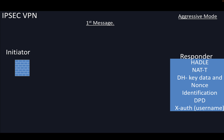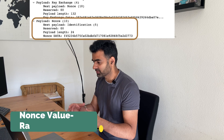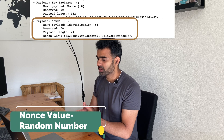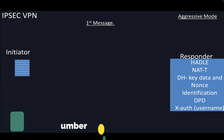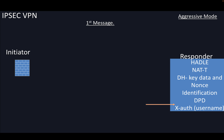Apart from that, NAT-T also goes in the first message. Diffie-Hellman key data also goes, and as we know in Diffie-Hellman, the nonce value — a random number — also goes in this message. The identification of the initiator, DPD (dead peer detection), and XAuth also are part of this message.